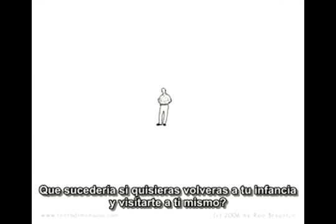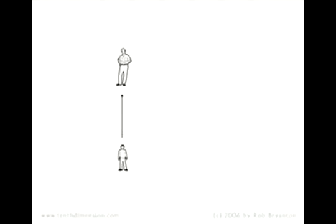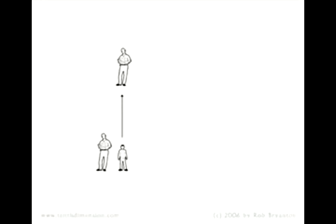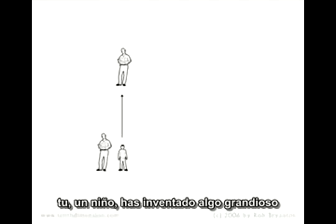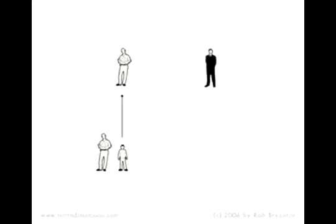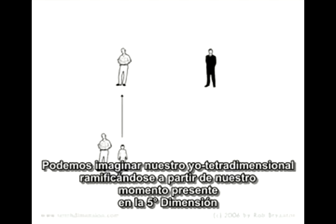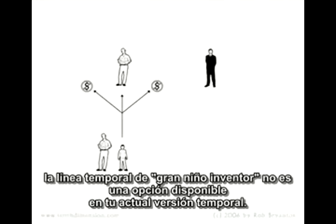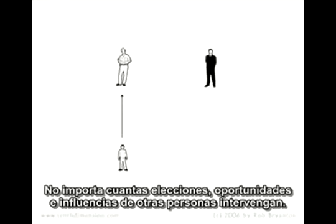What if you wanted to go back into your own childhood and visit yourself? We can imagine folding the fourth dimension through the fifth, jumping back through time and space to get there. But what if you wanted to get to the world where you had created a great invention as a child that by now had made you famous and rich? We can imagine our fourth-dimensional selves branching out from our current moment into the fifth dimension. But no matter where you go from here, the great child inventor timeline is not one of the available options in your current version of time.